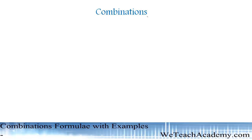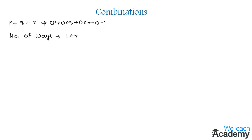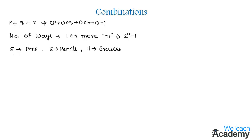Welcome back friends. In our previous video we discussed the introduction to combinations. Here we will learn a few more formulas on the same concept. If p things are alike of one kind, q things are alike of a second kind, and r things are alike of a third kind, then the number of ways of selecting any number of things out of p plus q plus r is given by (p+1)(q+1)(r+1) minus 1. The other formula: the number of ways of selecting one or more things out of n dissimilar things is 2 to the power n minus 1.